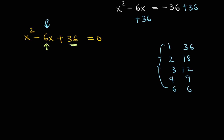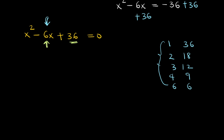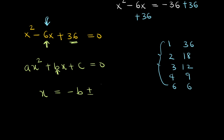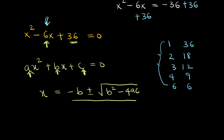So we are going to use the general quadratic formula. The general quadratic formula is given as ax squared plus bx plus c is equal to zero, and the formula for finding x is negative b plus or minus the square root of b squared minus 4ac, all divided by 2a. Comparing our equation with this, we can see that a is 1, b is negative 6, and c is 36.